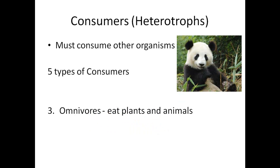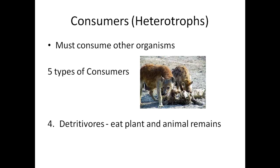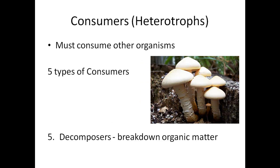Third, we have our omnivores. They eat both plants and animals. Fourth, we have our detritivores. They eat plants and animal remains. And fifth, we have our decomposers. We talked about these last unit. They help break down organic matter.